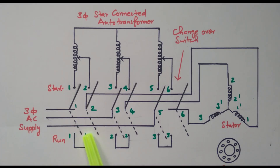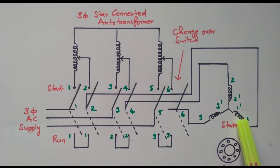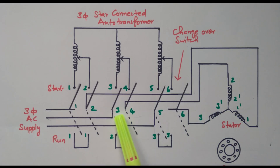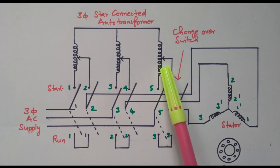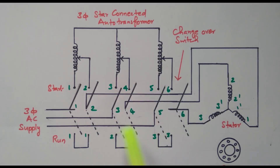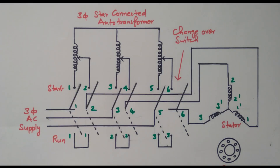The run position is simply a short circuit where the entire voltage is applied. We have a three-phase AC supply, and the stator is connected to the three-phase supply through the changeover switch. The star-connected auto-transformer is available at one end, and the other end is short-circuited. This end is called the starting position, and the other is the running position.